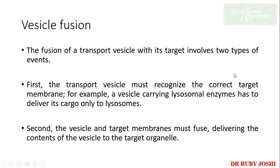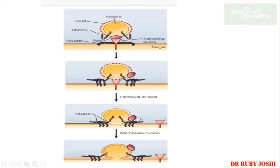Now coming to vesicle fusion. The vesicle has been formed and is being targeted to the proper destination. The transport vesicle must recognize the correct target membrane — for example, a vesicle carrying lysosomal enzymes must reach and deliver its cargo to the lysosome only. For fusion, the vesicle has V-SNARE on its surface and the target membrane has T-SNARE. V is for vesicle and T is for target. SNARE stands for SNAP receptor, where SNAP stands for soluble NSF attachment protein, and NSF stands for N-ethylmaleimide sensitive factor.